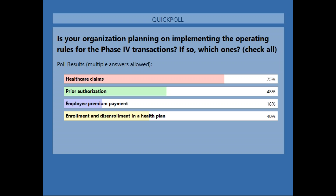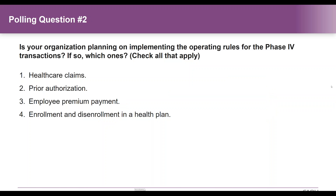Many of the attendees — between health plans, clearinghouses, and software vendors — probably have healthcare claim products, so those products are most ripe for certification for Phase 4. Many of those same entities may or may not have a prior authorization product or service available, so we'd expect a little bit of a decline there. The least common transactions are the premium payment and the enrollment/disenrollment transactions. It's heartening to see that 40% of respondents are considering certification for enrollment/disenrollment transactions, as more brokers and entities that facilitate relationships between employers and health plans adopt the transactions.